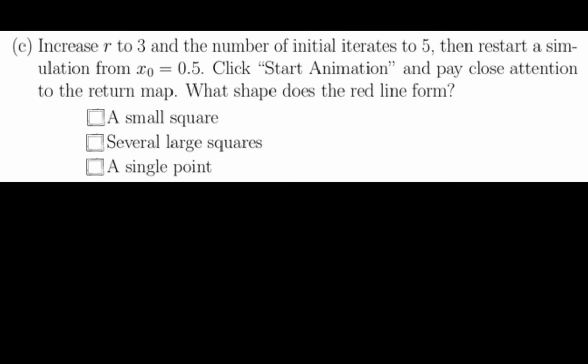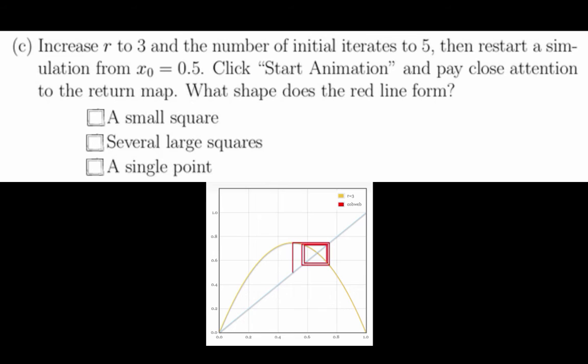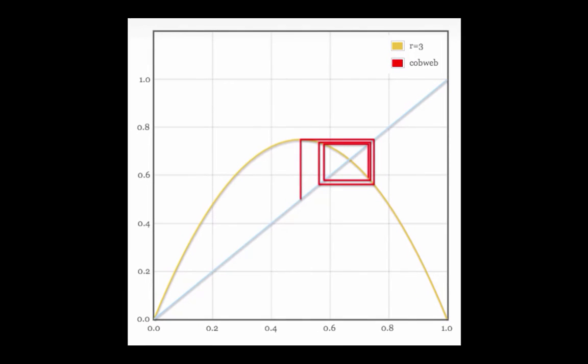For this problem, we set r equals 3, the number of initial iterates to 5, and have an initial condition of x0 equal to 0.5. Let's click Start Animation and see what shape emerges in the red line.